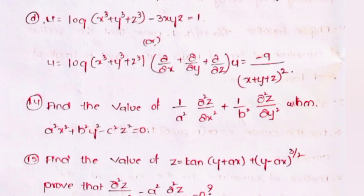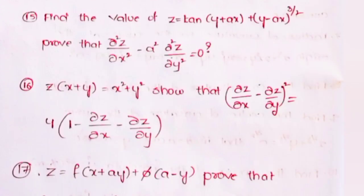Fourteenth, find the value of (1/a²)(∂²z/∂x²) + (1/b²)(∂²z/∂y²) when a²x² + b²y² − c²z² = 0. Fifteenth, prove that for z = tan(y + ax) + (y − ax)^(3/2), we have ∂²z/∂x² − a²·∂²z/∂y² = 0. Sixteenth, given z(x + y) = x² + y², show that (∂z/∂x − ∂z/∂y)² = 4(1 − ∂z/∂x − ∂z/∂y).